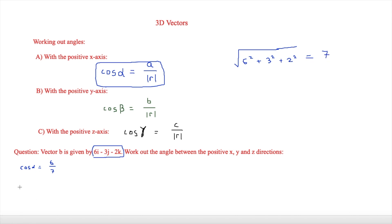But then we have that which means that then we're going to do cos minus 1 to the 6 over 7. And in degrees that is equal to 31 degrees. So that is our answer to the x direction.